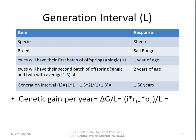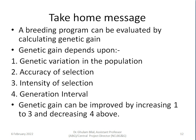To fit generation interval into genetic gain, we divide ΔG by L to get genetic gain per year. The take-home message: a breeding program can be evaluated by calculating genetic gain. Genetic gain depends upon genetic variation in the population, accuracy of selection, intensity of selection, and generation interval. We can improve genetic gain by increasing the first three factors and by reducing generation interval.